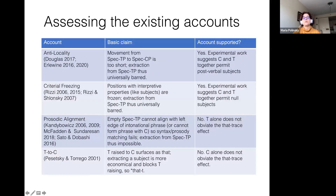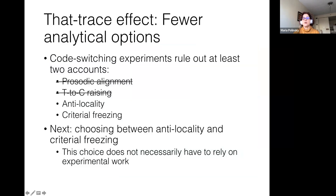Going back to the four theories — antilocality, criterion freezing, prosodic alignment, and T-to-C — the use of 'que' alone did not help with the that-trace effect, so T-to-C is out. The use of T alone did not help, so prosodic alignment is also out. We end up with two theories actually supported by experimental work: C and T together permit pre-verbal subjects, and C and T together permit null subjects. So we've successfully eliminated two out of four accounts. We don't yet have a story separating antilocality from criterion freezing, but that's the next step.